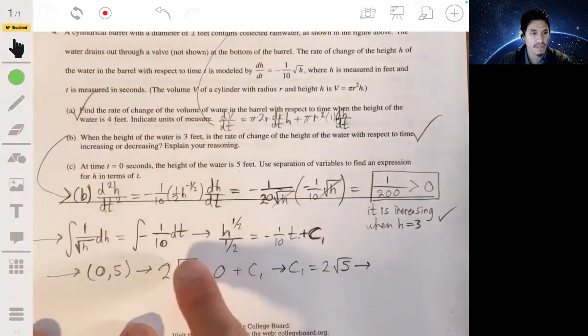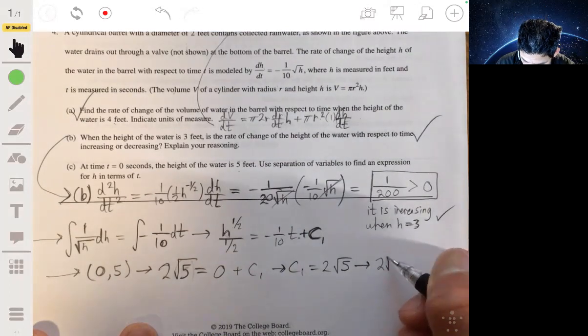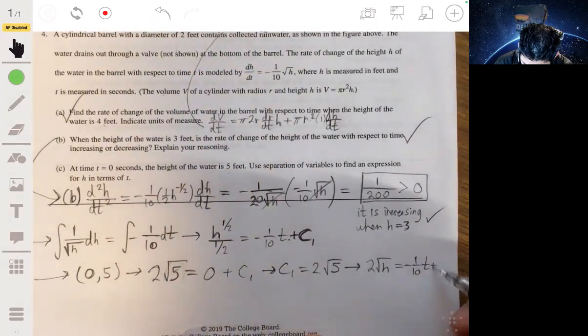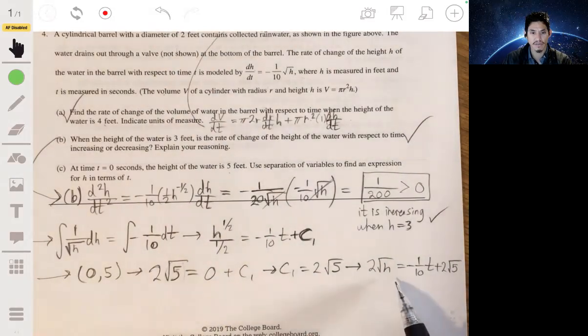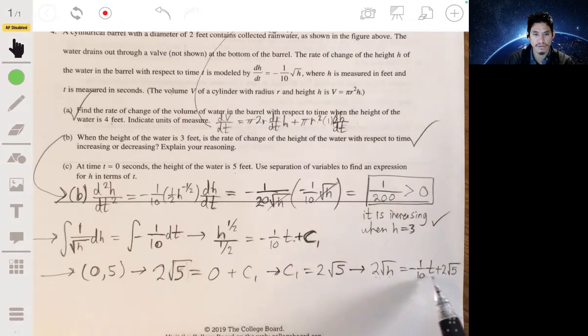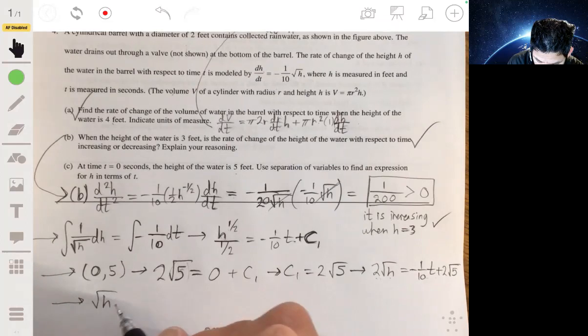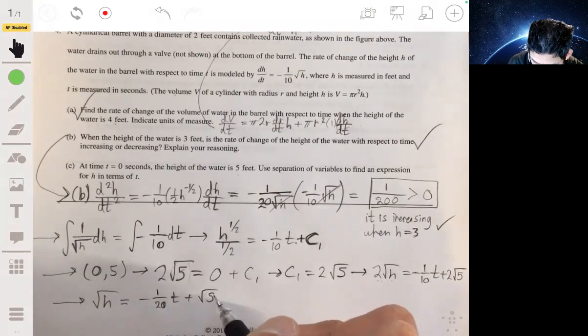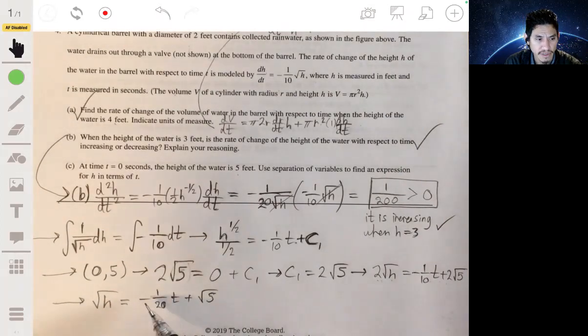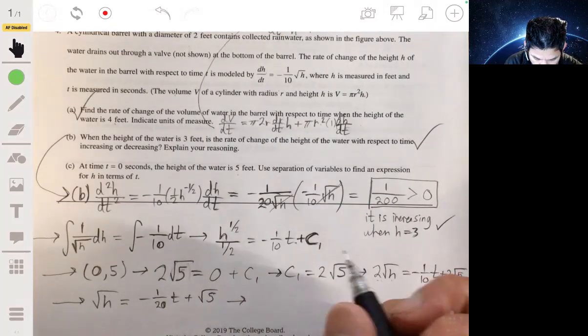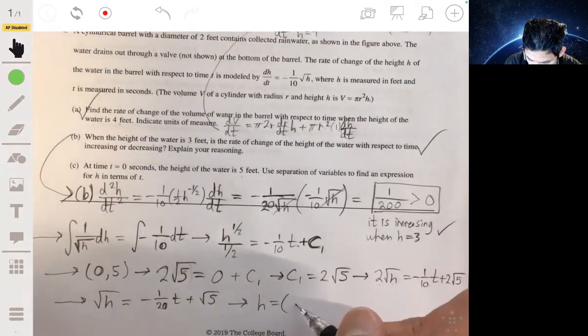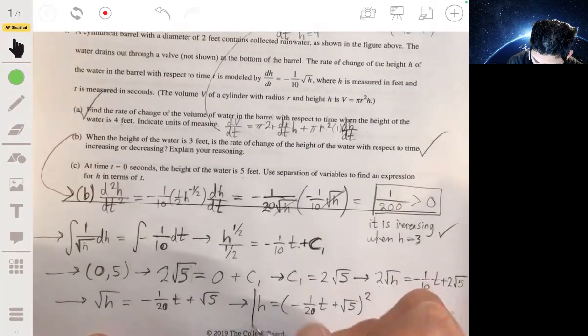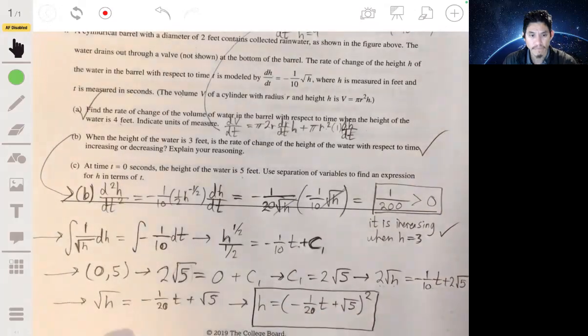And so your equation then becomes, replacing this, two square root of h is equal to negative one-tenth t plus two root five. To get h, you square the entire right quantity. And you'll get h equals the quantity of negative one-twentieth t plus root five, because these two's will cancel, all to the second power. And this will be your answer.